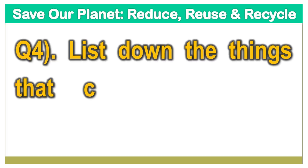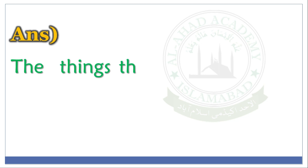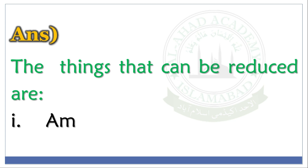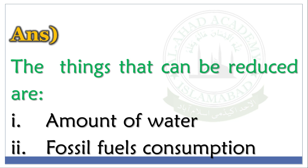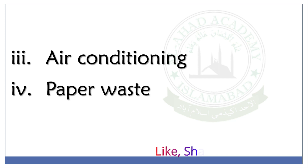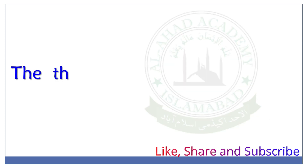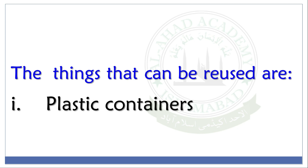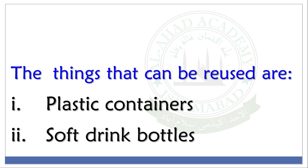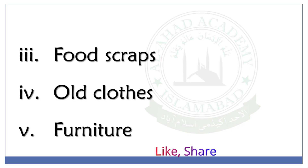Question No. 4. List down the things that can be reduced, reused, and recycled. Answer. The things that can be reduced are: amount of water, fossil fuels consumption, air conditioning, paper waste, and amount of plastic utensils. The things that can be reused are: plastic containers, soft drink bottles, food scraps, old clothes, and furniture.